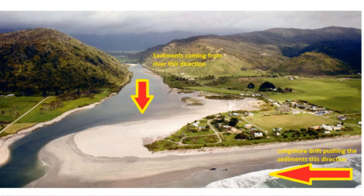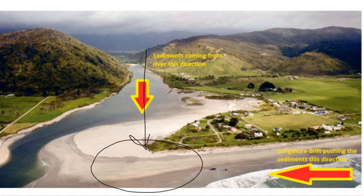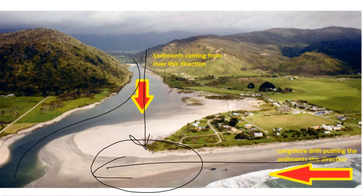Longshore drift is also the reason why when rivers meet the ocean, they don't have a nice, pretty opening. The river is bringing a bunch of sediments and trying to drop them off, but the waves are pushing them sideways. That's why the river has had to curve itself to get around the pile of sediments that the waves are piling up.